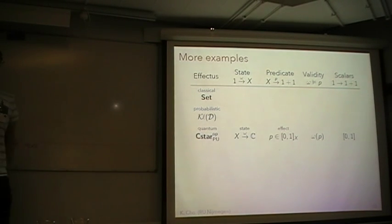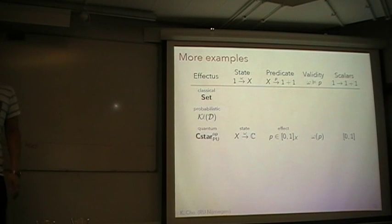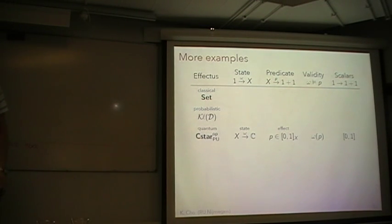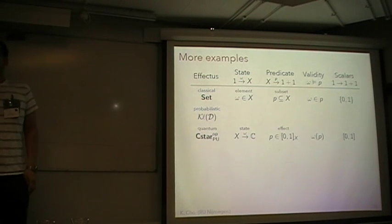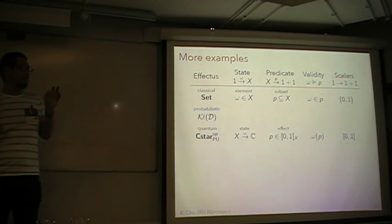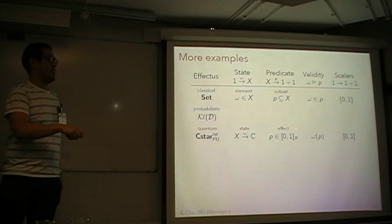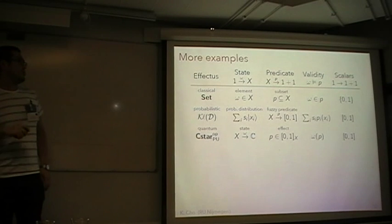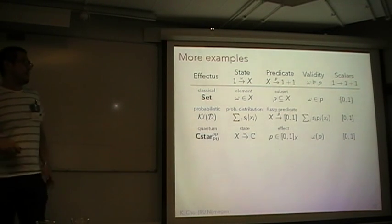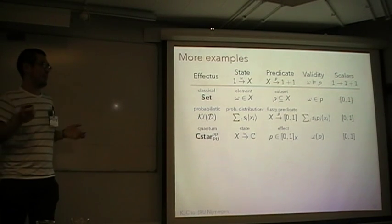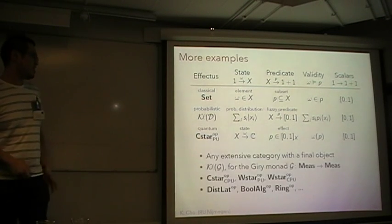Let's look at some more examples. The classical example of an effectus is given by the category of sets — a Boolean example. In the classical case, a state is simply an element, a predicate is a subset, and validity is given by membership. In this case, scalars are a two-point set — true or false. In the probabilistic case, a state is a probability distribution, a predicate is a fuzzy predicate — a function from X to the unit interval — and validity is given by the expectation value formula. Scalars are the unit interval.